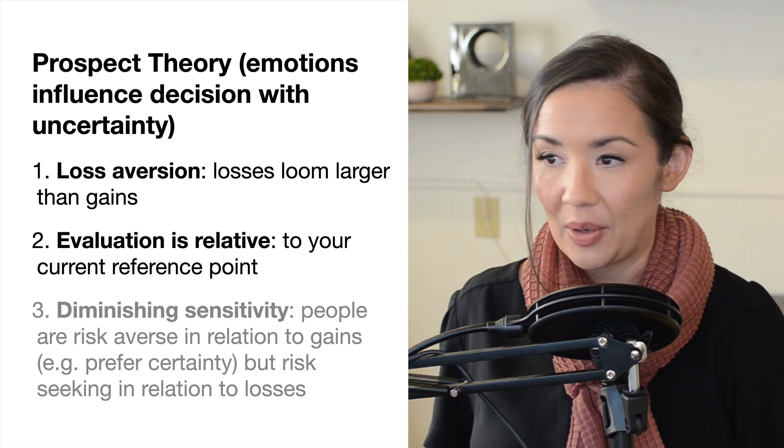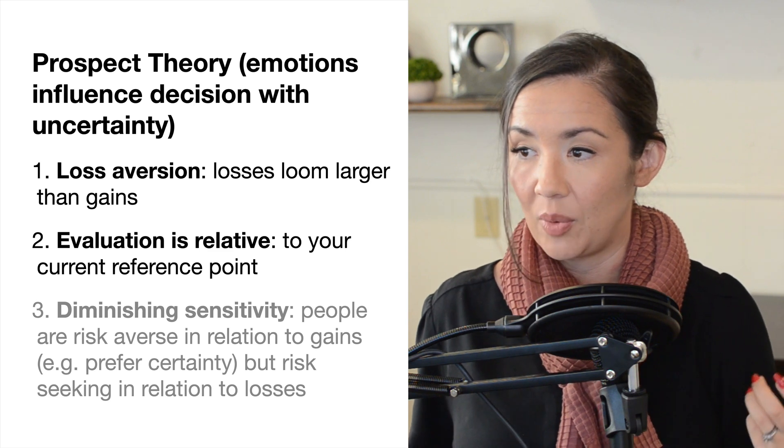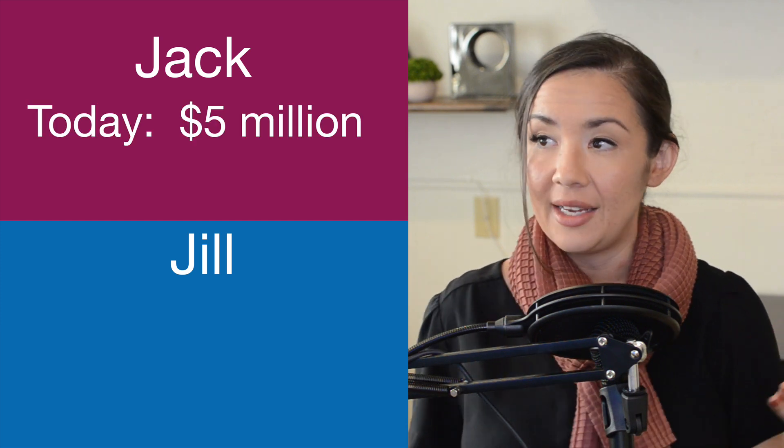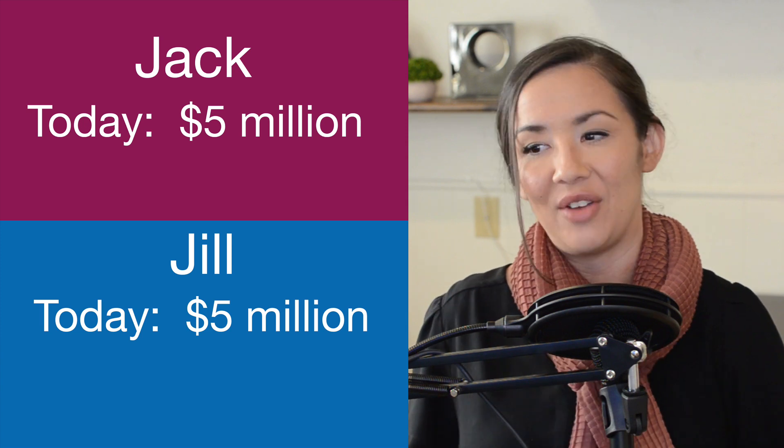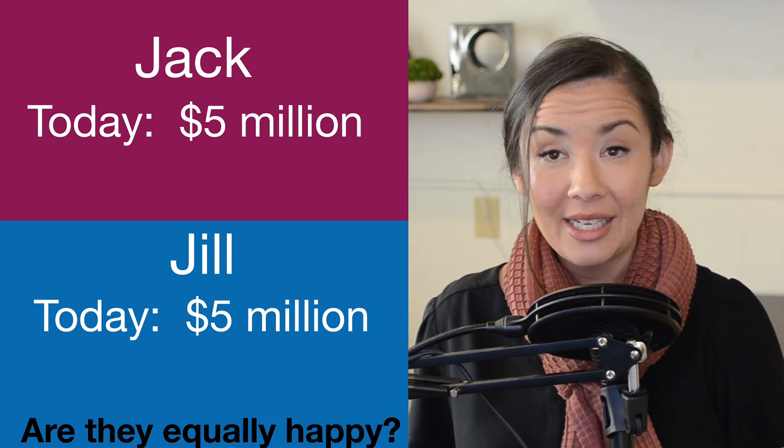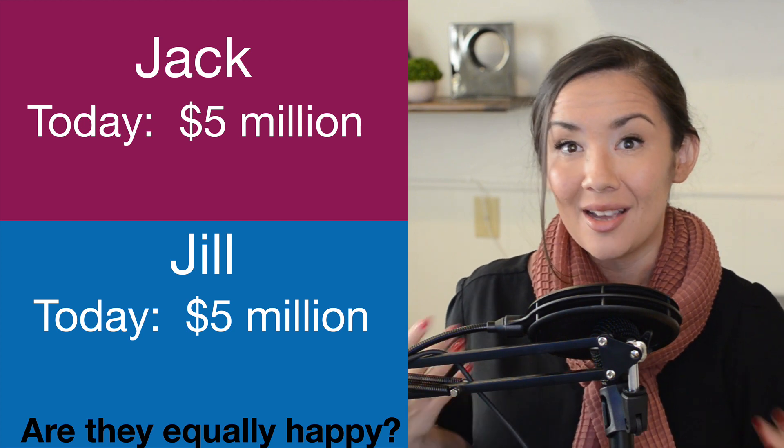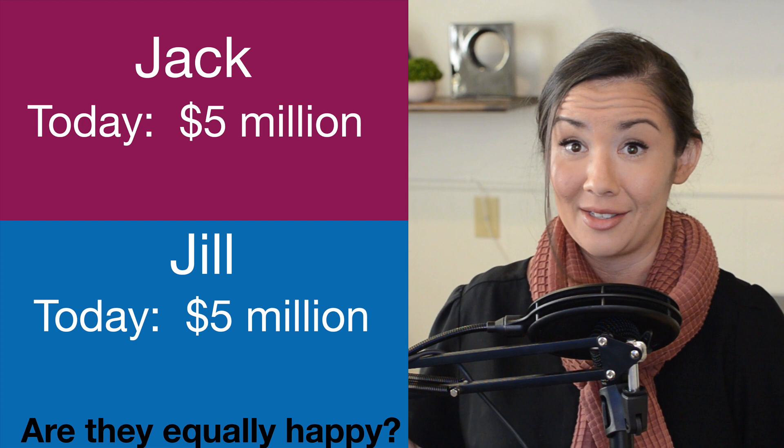Let's talk about the next component, which is evaluations are relative to your current reference point. Let's consider two people - we have Jack here and Jill. Today, Jack has $5 million and Jill has $5 million. Question is, are they equally happy? If you were to see this information, you would say yes, of course, they're equally happy. They both have $5 million. That's fantastic, really.